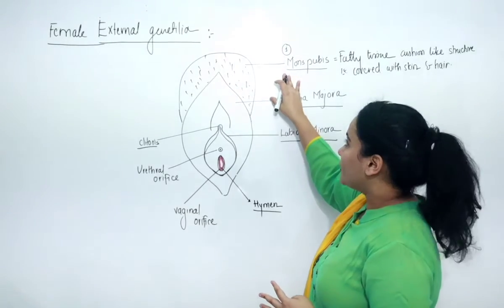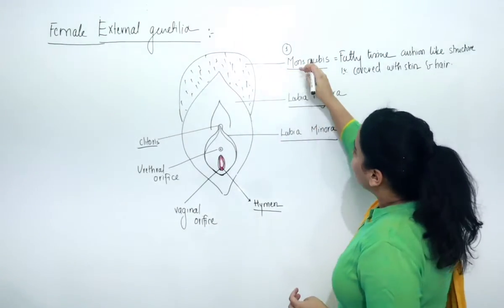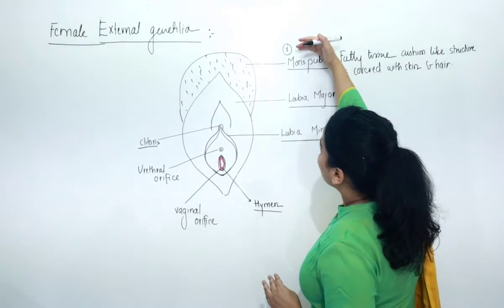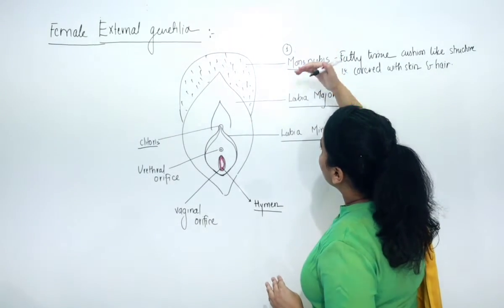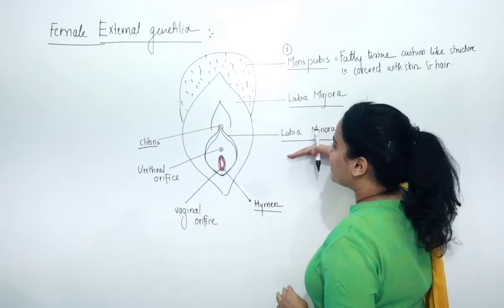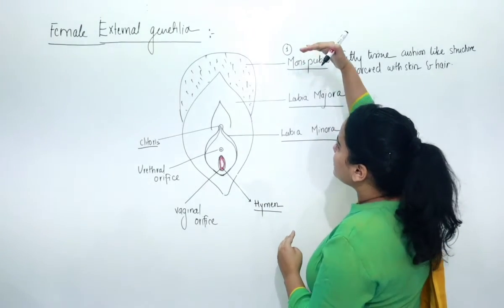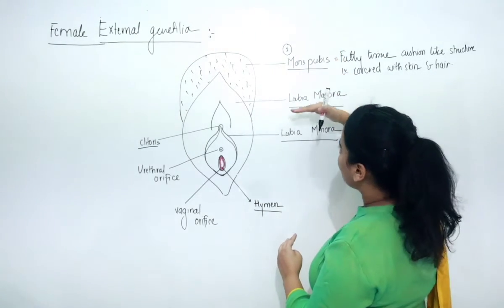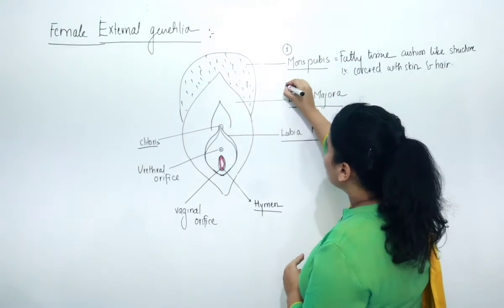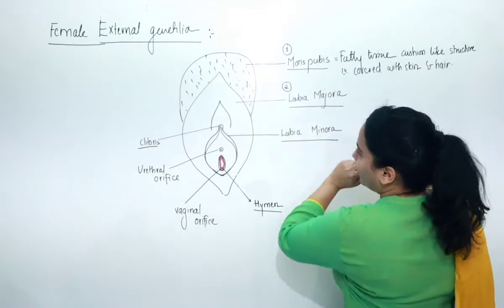This is the first structure, mons pubis. Just beneath mons pubis is labia majora, and beneath that is labia minora. So remember: first is mons pubis, second is labia majora, and then comes labia minora. Let us now describe labia majora.